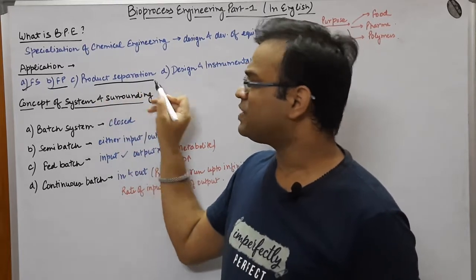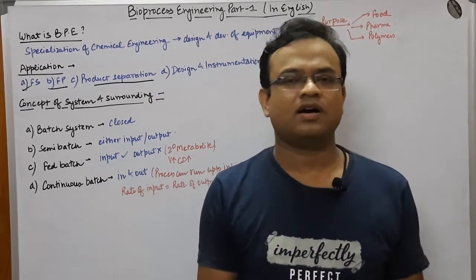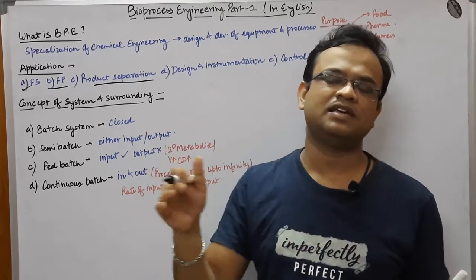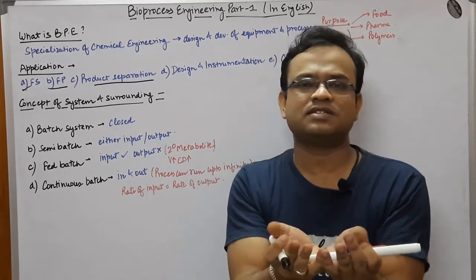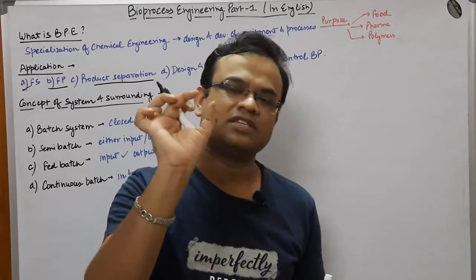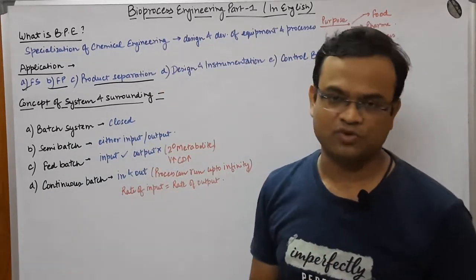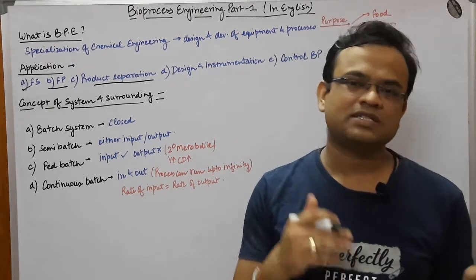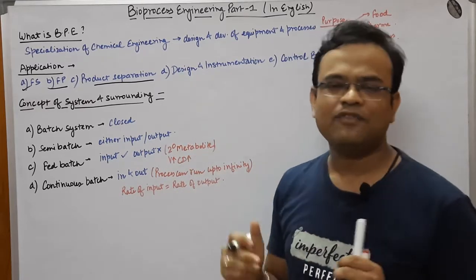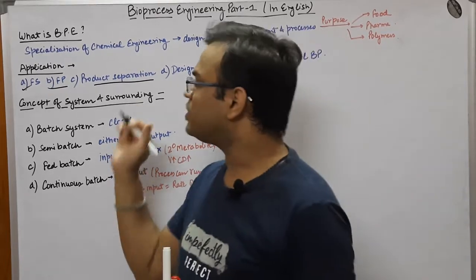The next application is product separation. Suppose you have a sample comprising of many components — A, B, C, D, E, F, G, H. Now you want to separate out one particular component, say B, from that sample. You can utilize bioprocess engineering for that as well. We would talk about how this can be done in upcoming lectures.